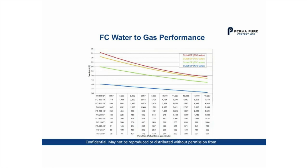The FC series can also be used for water-to-gas, and the FC water-to-gas performance chart works the same way as the MH performance curve: you pick the outlet dew point you need, and depending on the water temperature you are using, you read the outlet dew point off the curve.